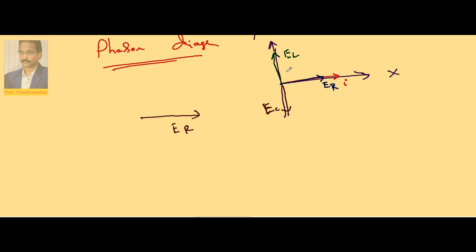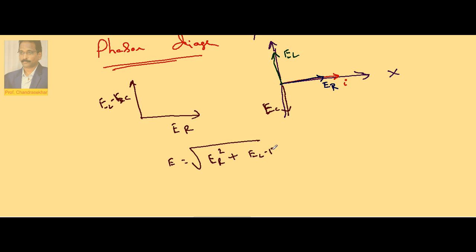If E_L is dominating, the net resultant is (E_L − E_C), and since E_R and this resultant are at 90° to each other, the net applied EMF is given by: E = √(E_R² + (E_L − E_C)²).